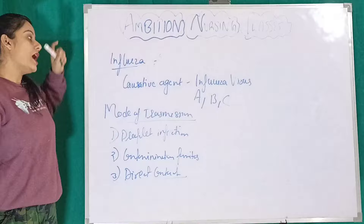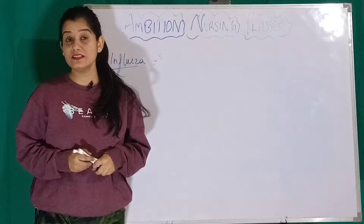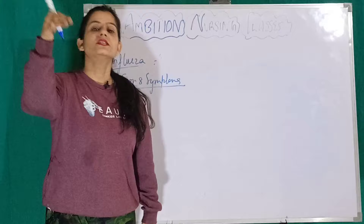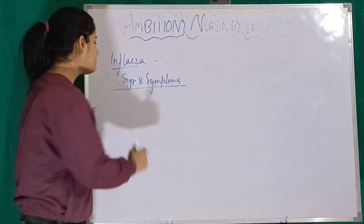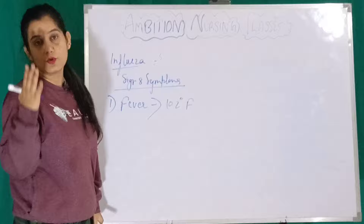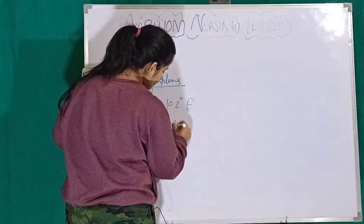Next, coming to Signs and Symptoms — what signs and symptoms will be shown in the Influenza patient. The first sign and symptom is fever. Because in any infection, whether it is bacteria, fungi, or virus, fever will arise first. Fever can go as high as 102 degrees Fahrenheit — meaning you will see high-grade fever. The second is malaise, which means chills, headache, and backache.